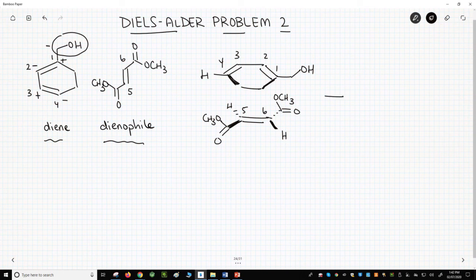Here is our cyclohexene for our product. Number our ring atoms. Let's add the groups. The up groups first.